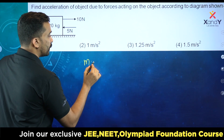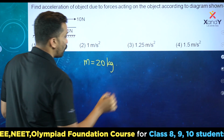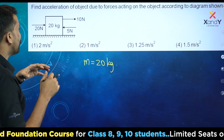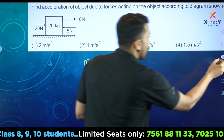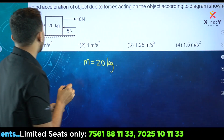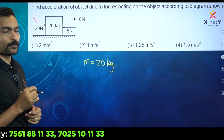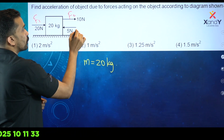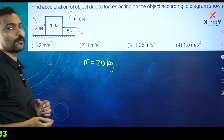There is a mass with multiple forces acting on it. There is a force — it is not a single force. There is a force of 20 N. This is F1. This is F2. There are two forces. And F3 — there are three forces.